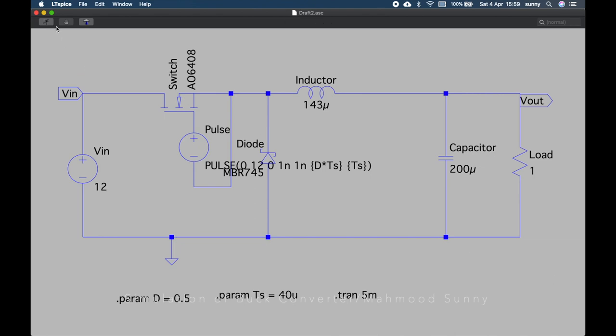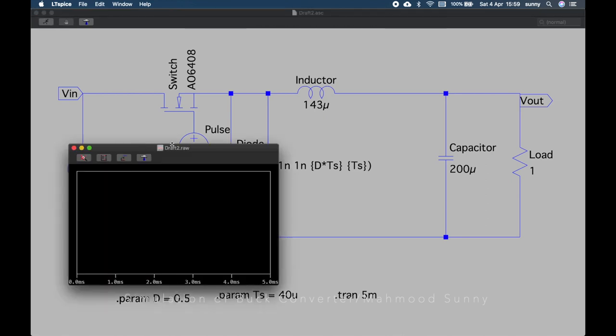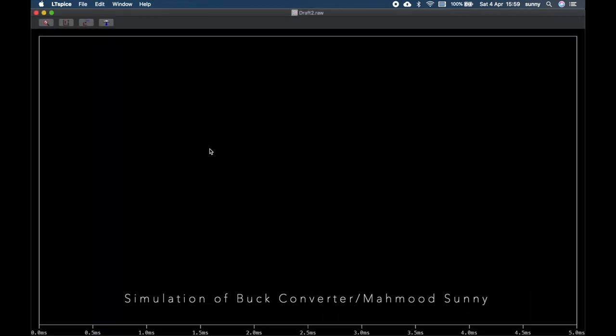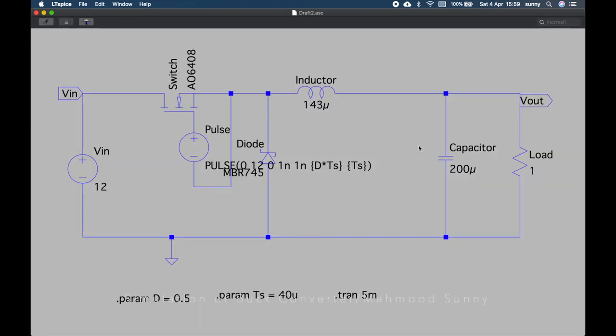To run the simulation, we just have to press this run button. If we press this run button, this scope opens up. Then, let's say, we first check the inductor current. We just press it here.